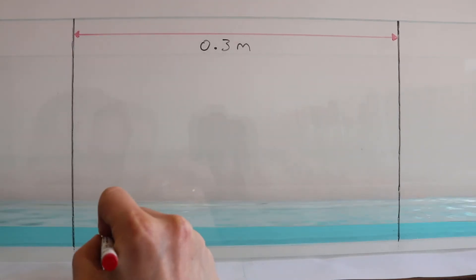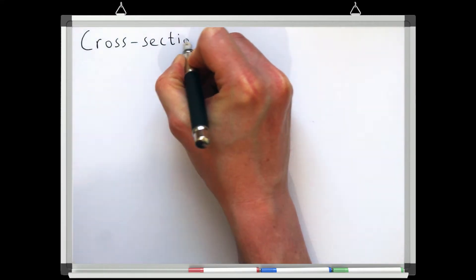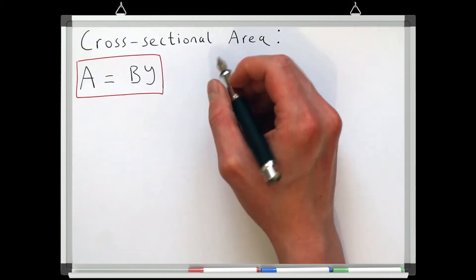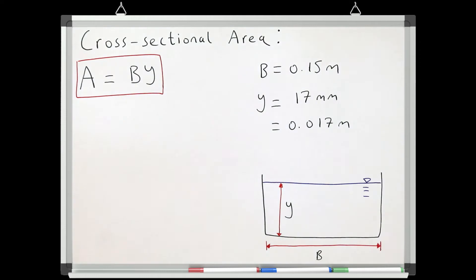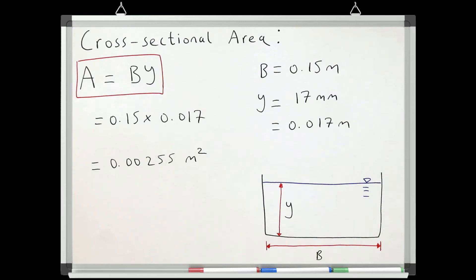So if the depth of water in the flume is 17 mm, and we know the flume is 150 mm wide, we could calculate the area by timesing these two numbers together, remembering to convert all lengths into meters first. This gives us an area in this example of 0.00255 meters squared.